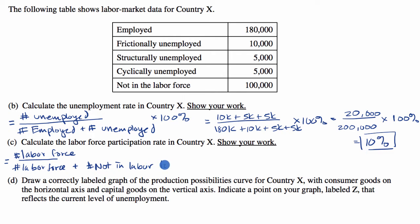You might say, well, this denominator is the eligible population — so who's not eligible? It would be people who are not of working age, people who are incarcerated or institutionalized in some way, or people in the military. And of course, we want to express this as a percentage.